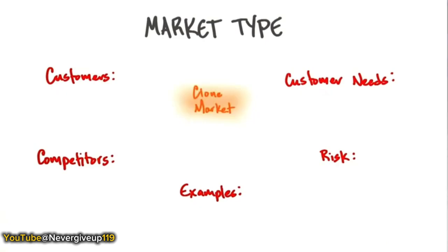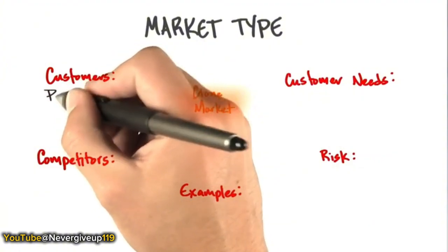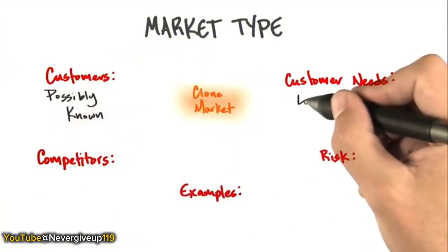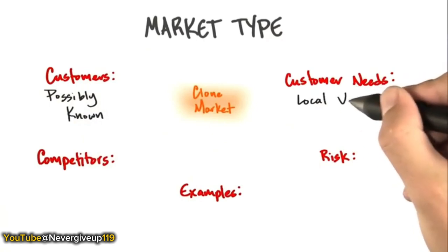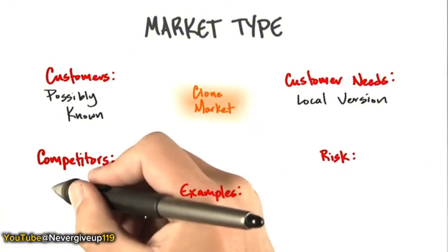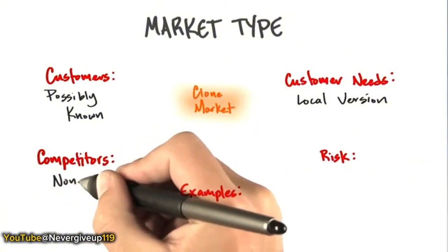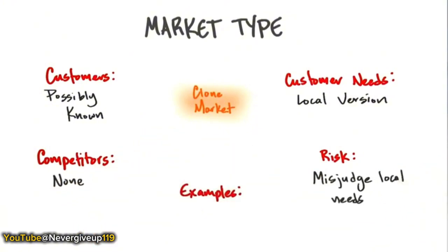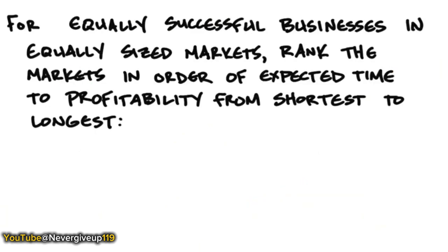A clone market takes an existing business model — typically from the U.S. — and copies it in another country with local conditions. The customers are possibly known. You localize the specific issues for your country or region. There are no competitors if you're first. The risk is misjudging local needs. A great example is Baidu.